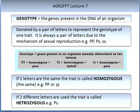In order to understand Mendel's inheritance, we must first deal with some terminology. The technologies and terminologies in genetics have evolved greatly, and the use of language is very important in understanding. The word genotype refers to the genes present in the DNA of an organism, usually denoted by a pair of letters representing one genotype of one trait. If two letters are the same, the trait is referred to as homozygous. If the letters differ, it is called heterozygous. A pure genotype is homozygous, while a hybrid is heterozygous.